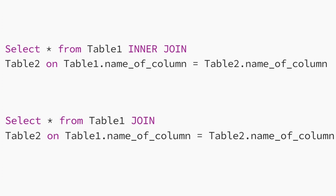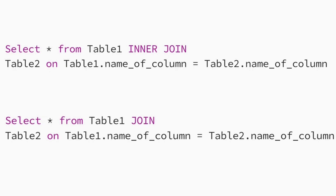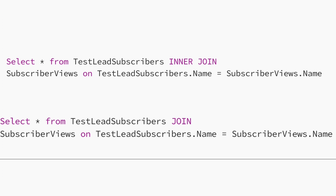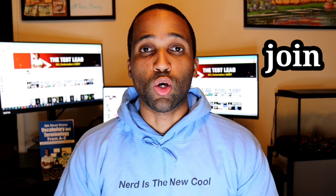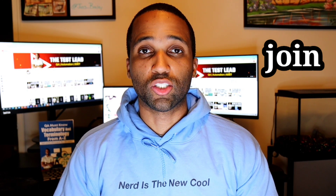You can select specific columns to display in your result set by adding column names to your select statement. Please make sure that the columns you're joining your data on have the same data types. We will replace table one with the first table we want to join and table two with the second. There is no limit to the number of tables we can join. Here's an example: select star from test lead subscribers join subscriber views on test lead subscribers dot name equals subscriber views dot name. The column we're joining on must have the same exact data type — in this case, the name column is a string in both tables. This will return all the values that match from both tables.